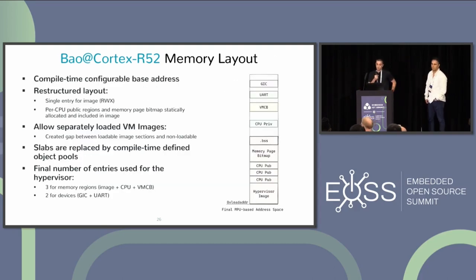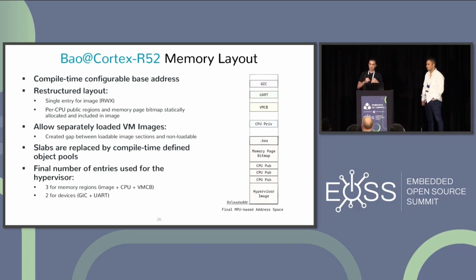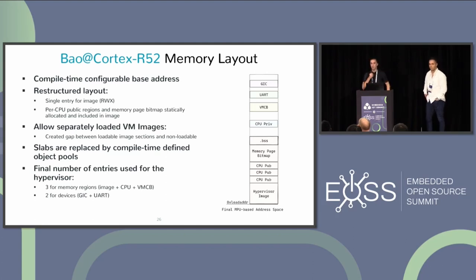What we did was: since it's an identity mapping, we provided a configurable base address for the image and structured the layout so all the structures can be really contiguous. We leveraged the fact that this hypervisor is statically configured and did more things at compile time. We now have only one region for the image, one region per CPU, one region for the VM that CPU is running, and a couple of entries for the console, UART, and interrupt controller. Right now we use five MPU entries independently of what platform you run — more scalable.